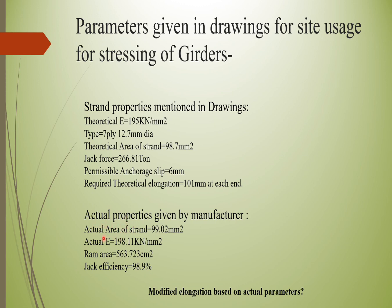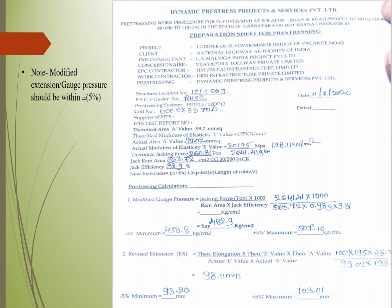The actual area of a strand given by the manufacturer is 99.02 mm², the actual modulus of elasticity is 198.11 kN/mm², the ram area of the jack is 563.723 cm², and the jack efficiency is 98.9%. Therefore, we need to calculate the modified elongation based upon the properties given by the manufacturer.